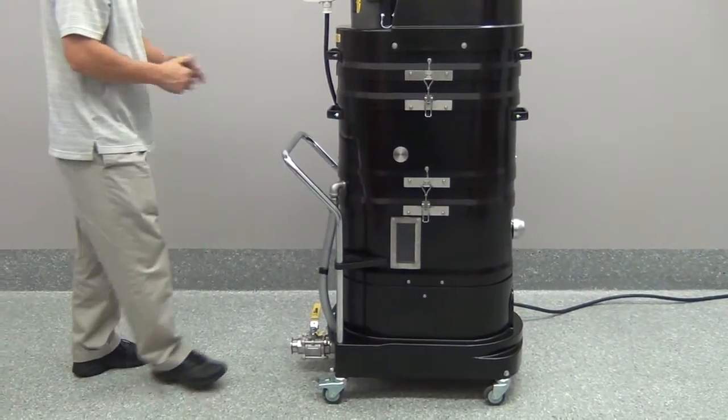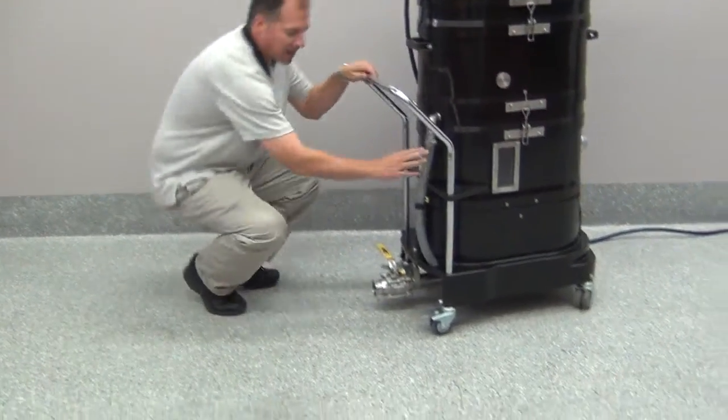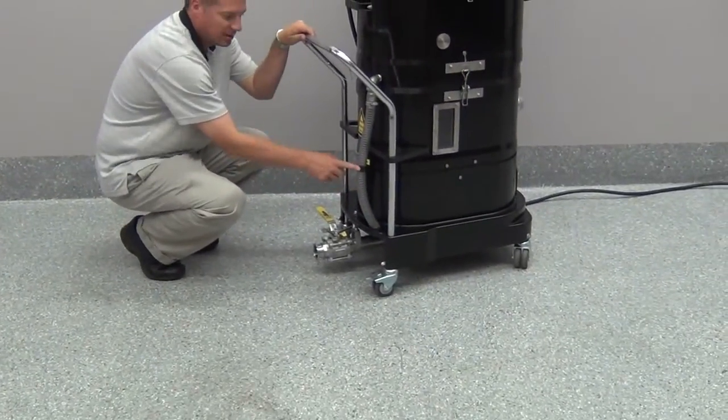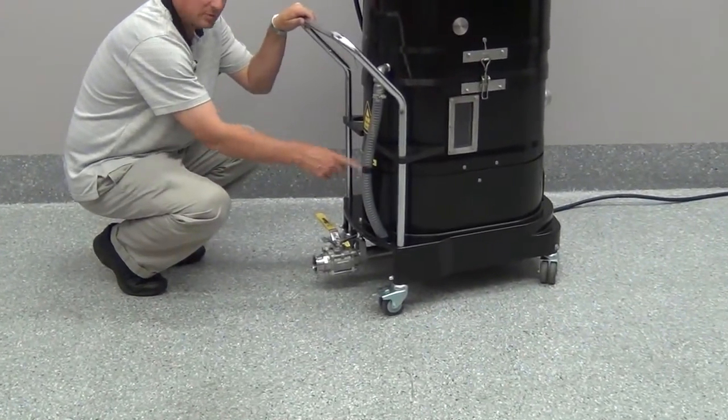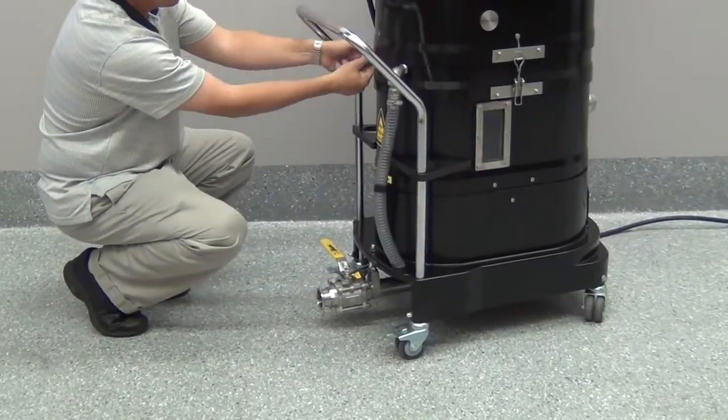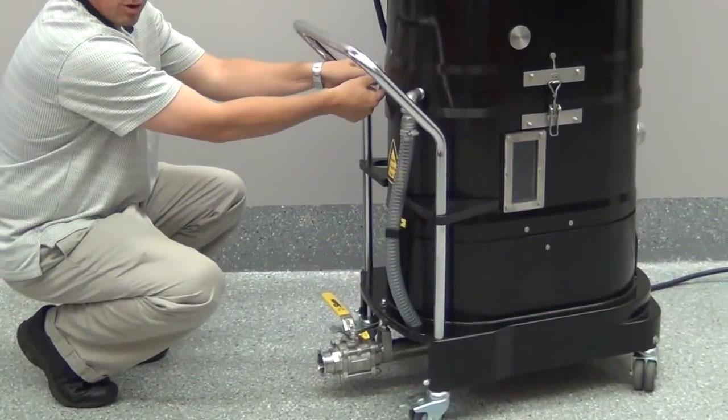We have on the outside here a sight glass that tells us the liquid level, so it tells us what our water level is when we fill it. We have a water fill system, stainless steel garden hose size water fill system.